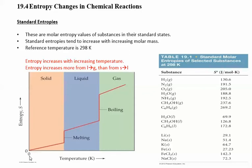This graph is showing how entropy can change with temperature. Entropy is going to increase whenever you increase temperature — we've already looked at that before. If you have a solid and you increase the temperature, the entropy goes up until you reach the melting point.